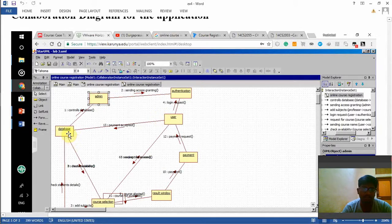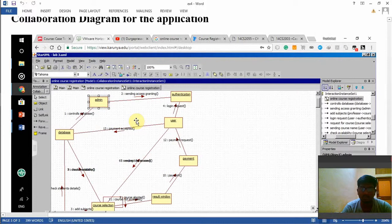There may be two or more interactions from a single object. For example, if we consider the database, there are different transactions, different links with different objects. This is what is meant by a collaboration diagram of an application. Thank you.